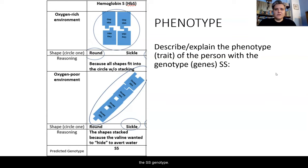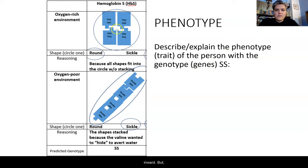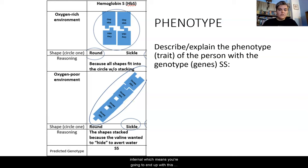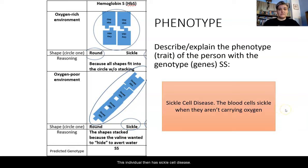For the SS genotype, in an oxygen-rich environment, the extensions point inward but there's no stacking, so we have a round-shaped blood cell. However, in an oxygen-poor environment, the shapes start to stack together because valine wants to hide away from the water. They stack and hide that internally, resulting in a rigid, straight structure — a sickled cell. This individual has sickle cell disease; the blood cells sickle when not carrying oxygen.